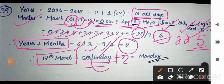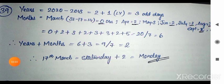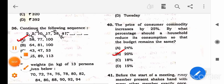Since 17th March is Saturday, add 2 days: Saturday → Sunday → Monday. So the answer is Monday.